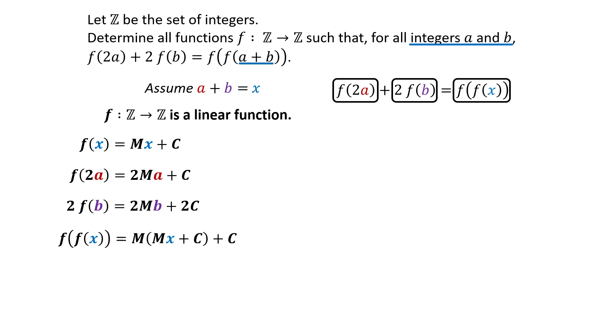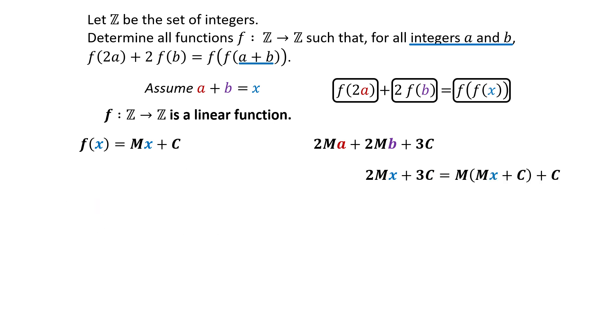The left side of the equation is 2MA plus 2MB plus 3C. Since A plus B equals X, it can be written as 2Mx plus 3C. The right side of the equation is M times Mx plus C plus C. The equation can be rearranged as Mx plus C times M minus 2 equals 0.